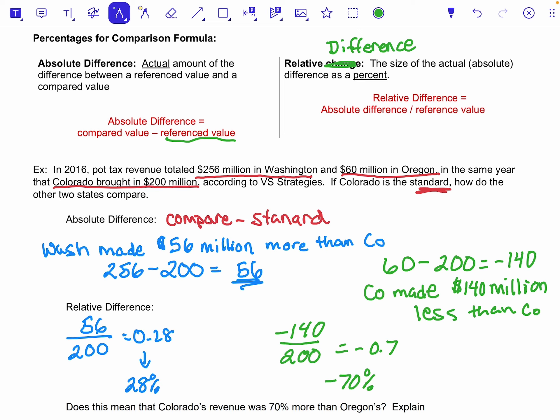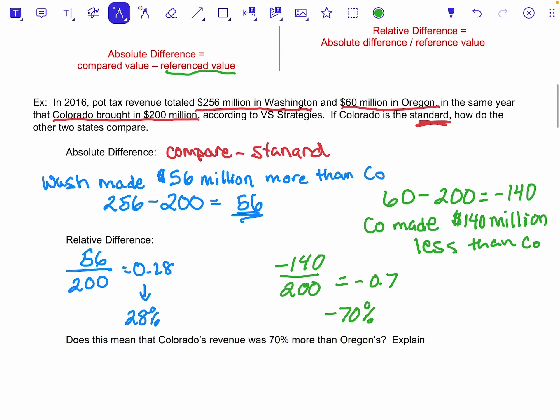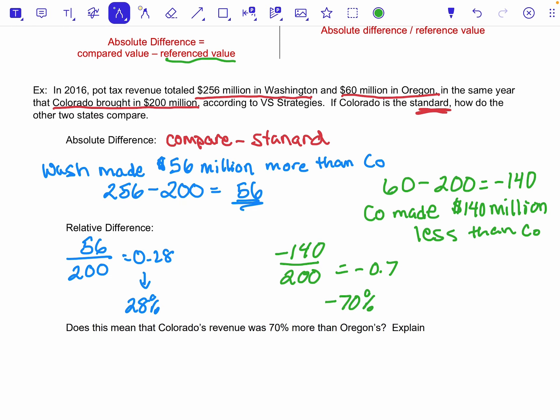Or negative 70%. And so I could describe that as saying okay, Oregon made 70% less revenue than Colorado in 2016. And granted, remember the signs carry. Now does the reverse of that work? So I just said here with that negative 70% that tells me that Oregon made 70% less than Colorado in 2016.